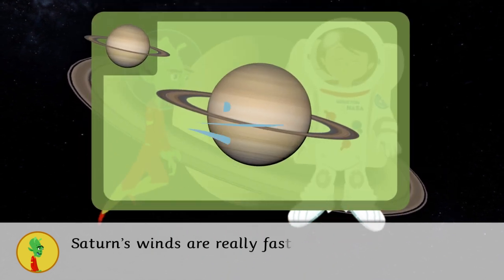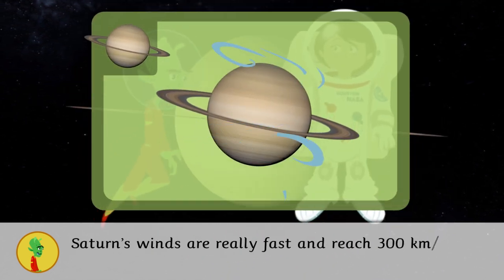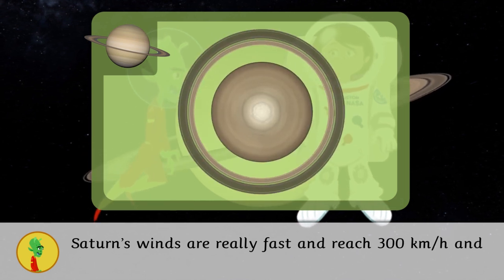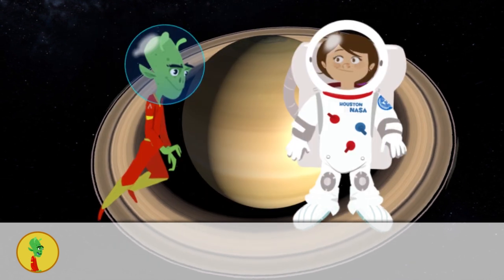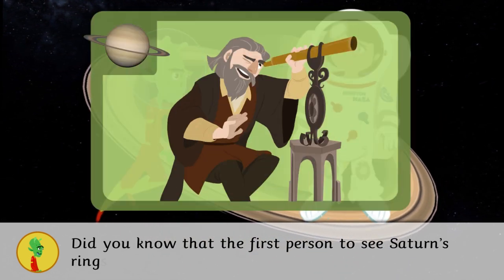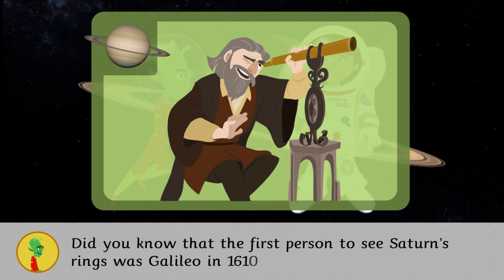Saturn's winds are really fast and reach 300 kilometers per hour and make a hexagon in its north pole. Did you know that the first person to see Saturn's rings was Galileo in 1610?